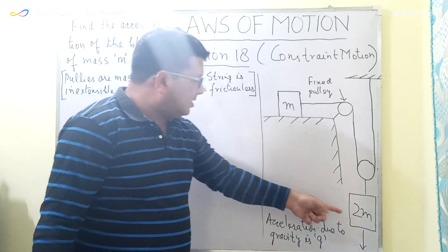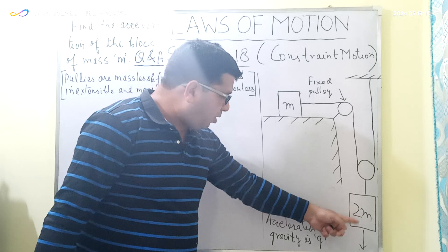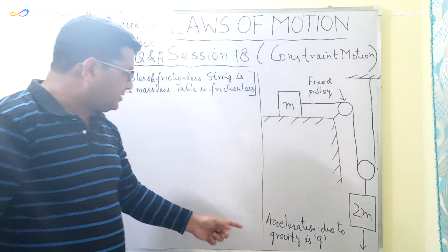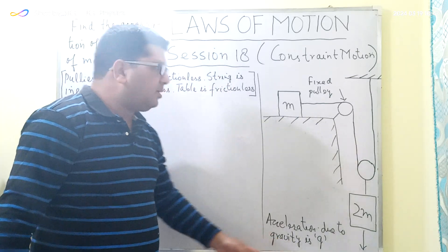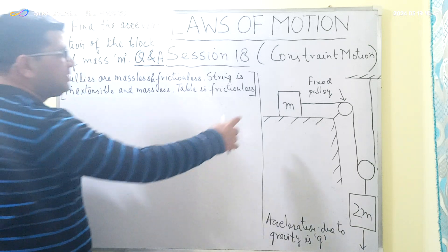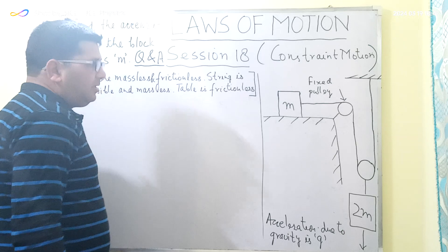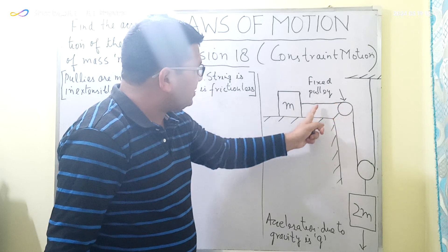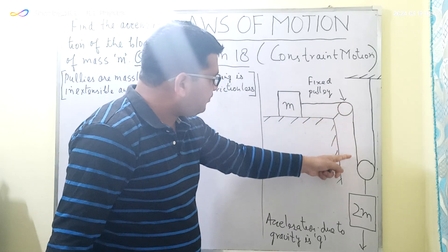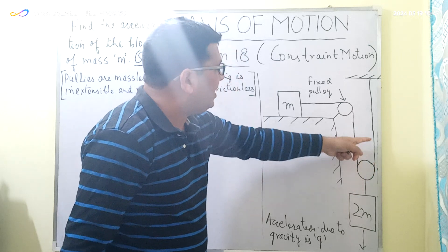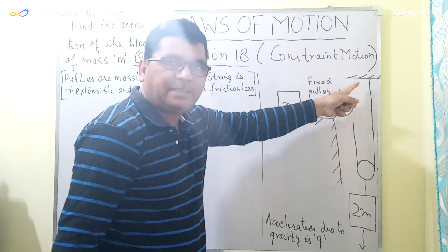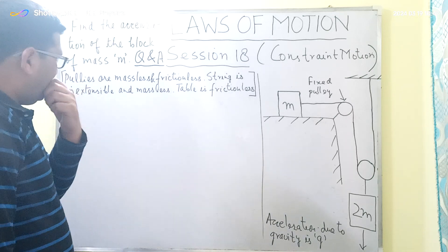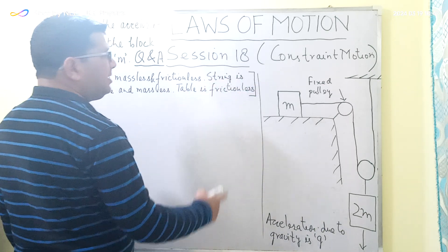The block of mass 2M is moving in the downward direction as indicated by the arrow, and the acceleration due to gravity is G. The block of mass M is lying on the table, attached to a string that passes through the fixed frictionless pulley, then over the movable pulley. One end of the string is attached to a rigid support and the other end to the block of mass M.